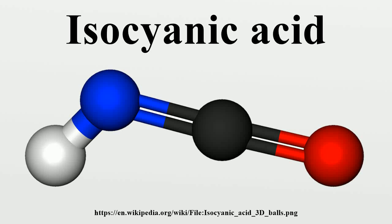Isocyanic acid is an organic compound with the formula HNCO, discovered in 1830 by Liebig and Wohler. This colorless substance is volatile and poisonous, with a boiling point of 23.5 degrees Celsius.